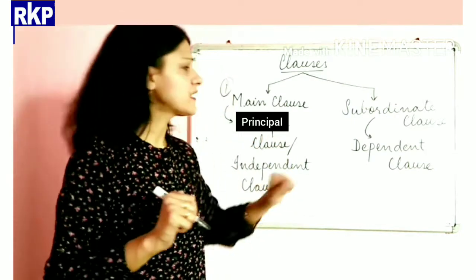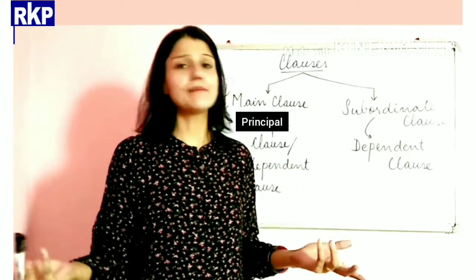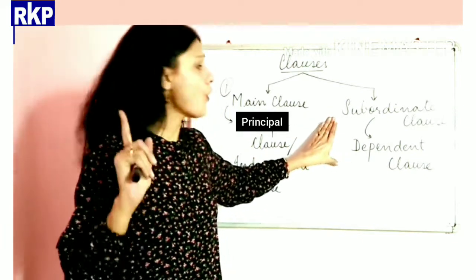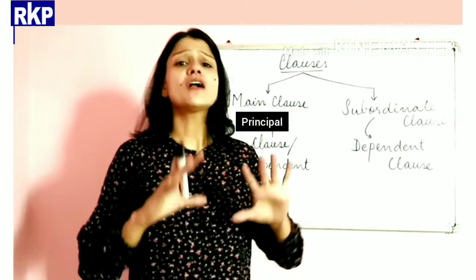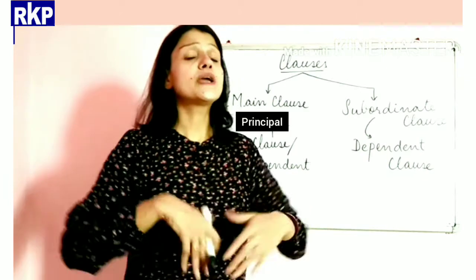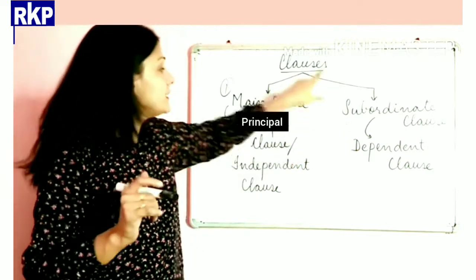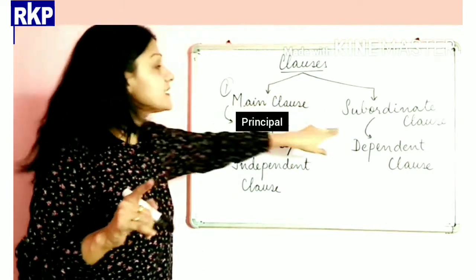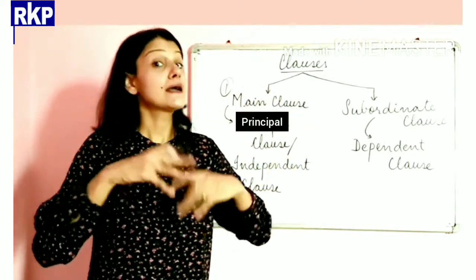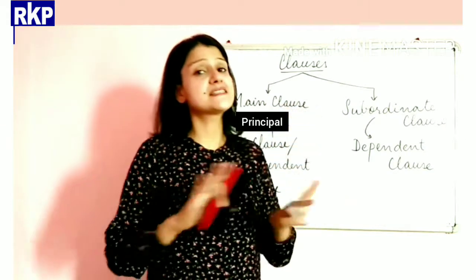Why does the subordinate clause need to depend on something else? Because a subordinate or dependent clause does not give us complete sense on its own. It needs to depend upon the main clause to give complete sense. The independent or main clause, on the other hand, can stand alone — it is sufficient on its own.